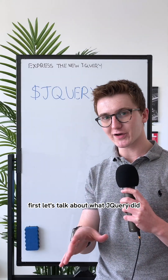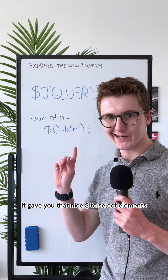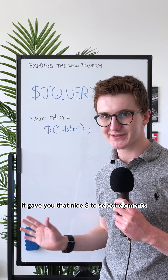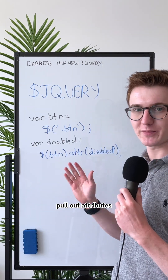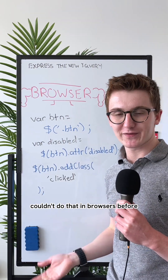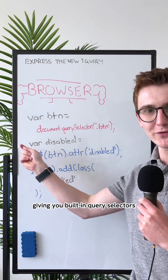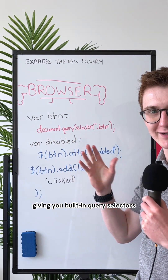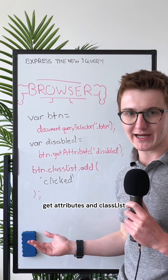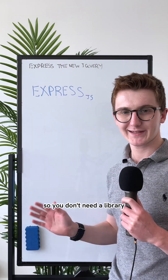First, let's talk about what jQuery did. It gave you that nice dollar sign to select elements, pull out attributes, add classes, and more. If you couldn't do that in browsers before, then it caught up — giving you built-in query selectors, getAttribute, and classList, so you don't need a library.